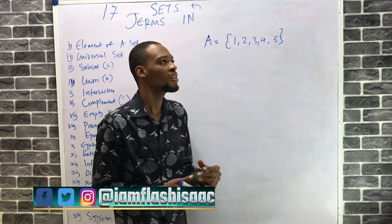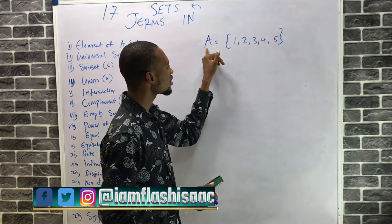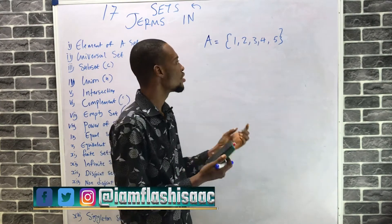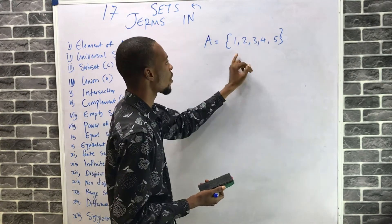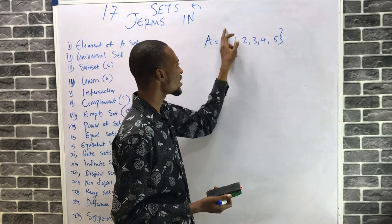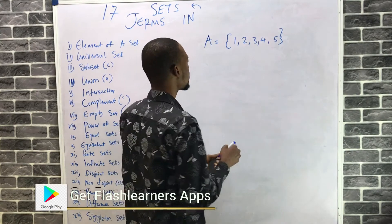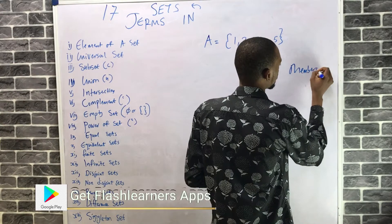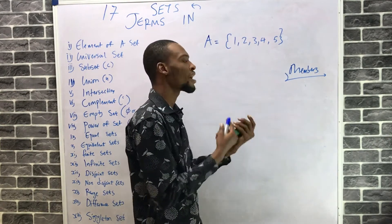Elements are members of a set. This is set A, which is a set of numbers from 1 to 5. The whole numbers from 1 to 5 are 1, 2, 3, 4, 5. Each number is an element or member of the set. So 1 is a member, 2 is a member, 3 is a member.